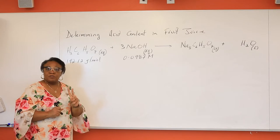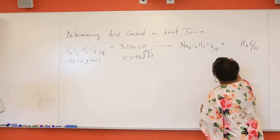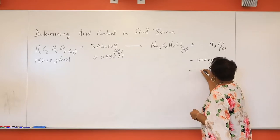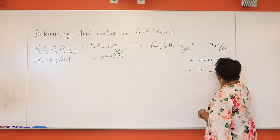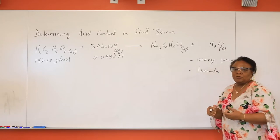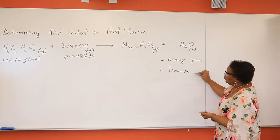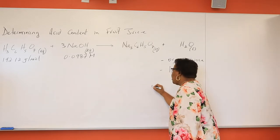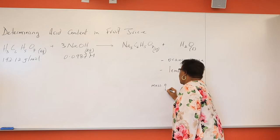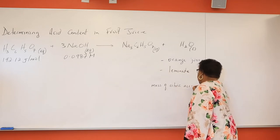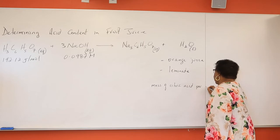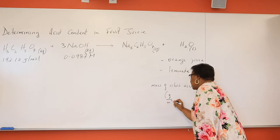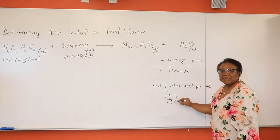In today's lab you are going to be provided with two fruit juices. I am going to be giving you a sample of orange juice and likewise a sample of lemonade. So you probably can already guess, but the goal before you complete this experiment is that you want to determine what is the mass of citric acid per milliliter. At the end you are going to be reporting the mass, the grams of citric acid per ml.